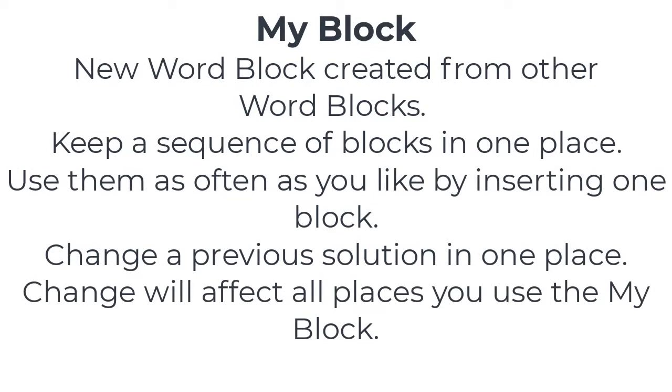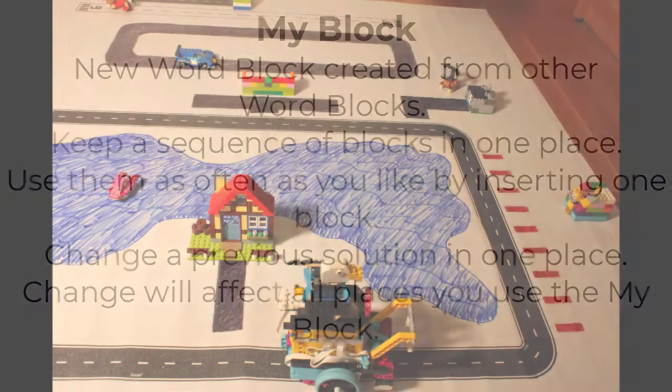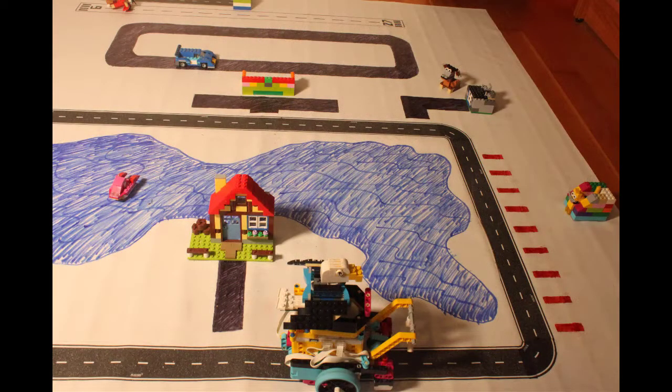These benefits may seem pretty abstract, so let's take a look at an example. To navigate along the road we need to create a sequence of blocks that turn and then go straight. Let's create a my block that performs the turns and then use it to program Chariot to travel to the animal shelter.